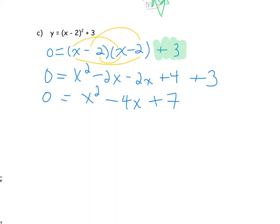These look like nice, friendly numbers, so it's worth checking if we can factor first. I'd look for two numbers that multiply to give 7 but add to give negative 4. Since 7 is prime, the only factor pairs are 1 and 7 or their negatives — but neither combination adds to negative 4. So factoring is out, and we need to use the quadratic formula.